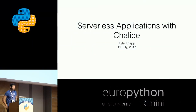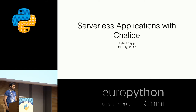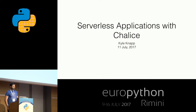Hi everyone. My name is Kyle Knapp, and I'm a software developer at Amazon Web Services where I primarily focus on developing Python client-side tooling, such as the AWS CLI, the AWS SDK for Python, also known as Boto3, and a Python microframework for developing serverless applications known as Chalice. Today I'm going to talk to you about how you can go about writing serverless applications using Chalice.